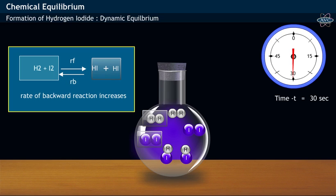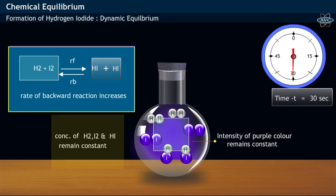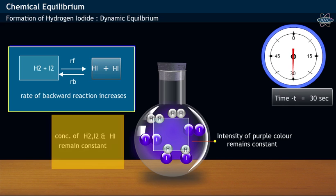At a particular instant of time, say 30 seconds, it was found that physical properties like intensity of purple color remain constant. At this stage, the concentration of Hydrogen, Iodine, and Hydrogen Iodide have a constant value.